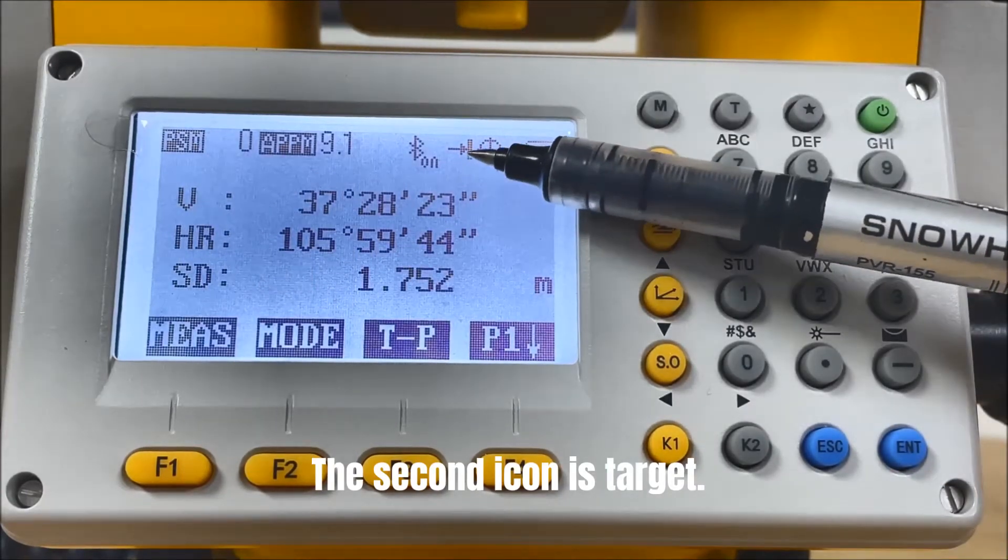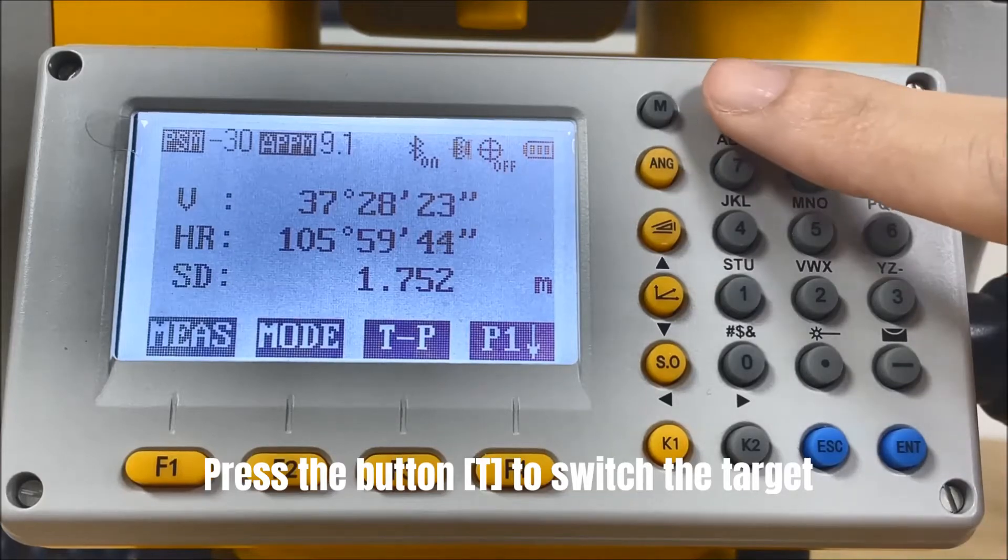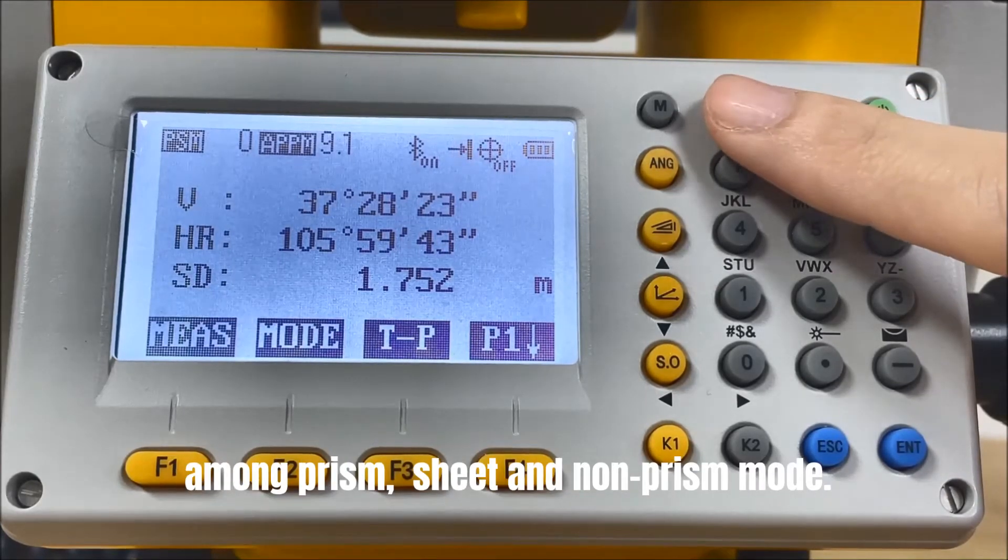The second icon is Target. Press the button T to switch the target among prism, sheet, and non-prism mode.